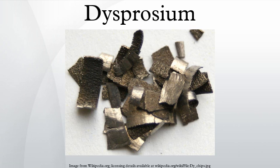Dysprosium and holmium have the highest magnetic strengths of the elements, especially at low temperatures. Dysprosium has a simple ferromagnetic ordering at temperatures below 85 K. Above 85 K, it turns into a helical anti-ferromagnetic state in which all of the atomic moments in a particular basal plane layer are parallel and oriented at a fixed angle to the moments of adjacent layers. This unusual anti-ferromagnetism transforms into a disordered state at 179 K.